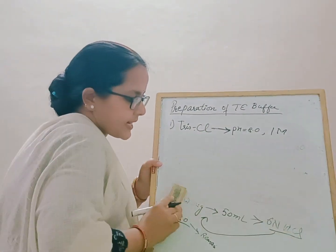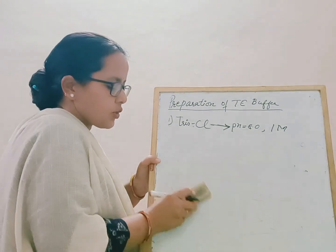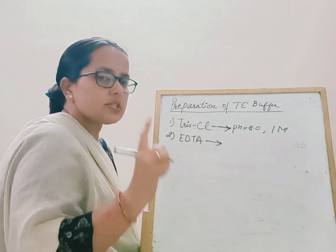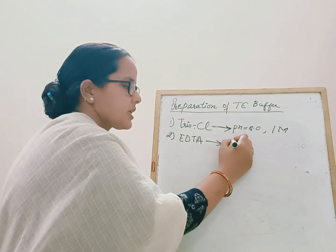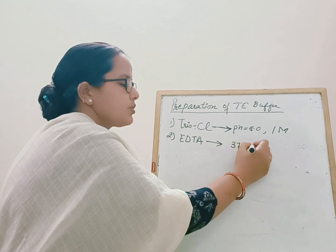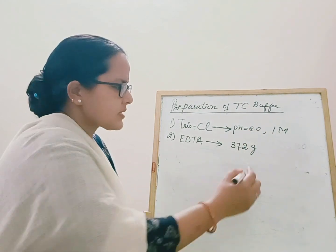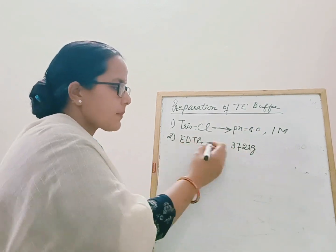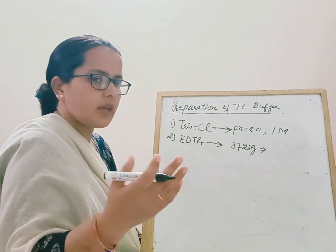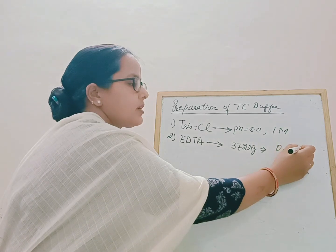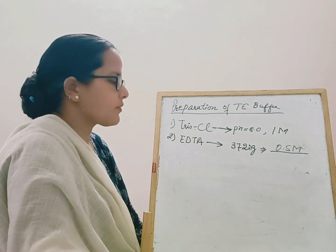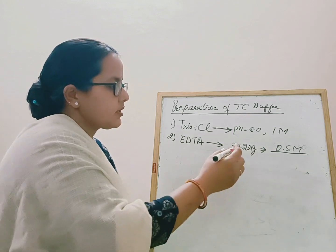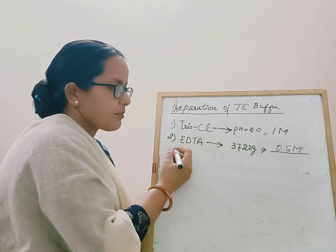Now for the second component — EDTA. The EDTA to purchase is di-sodium EDTA, with a molecular weight of 372.21 grams per mole. You need to prepare a stock of EDTA, and it is very difficult to dissolve EDTA at concentrations above 0.5 molar, so 0.5 molar is the recommended stock concentration.